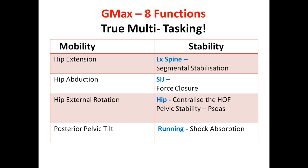Activity-wise, the glute max is a key extensor as well as an external rotator. Along with the psoas it's involved in stability of the posterior pelvic tilt. It provides segmental stabilization to the lumbar spine. It's the primary and most powerful muscle for centralizing the head of femur, and it gives force closure for the SIJ.